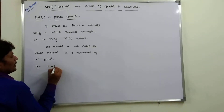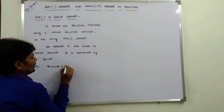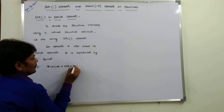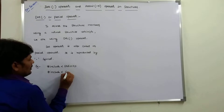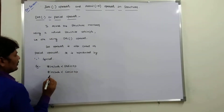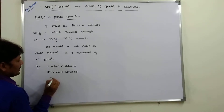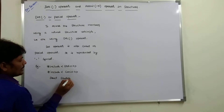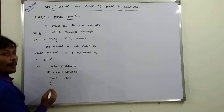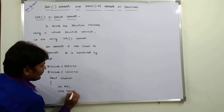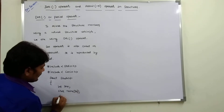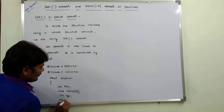Here is an example program. We have hash include stdio.h and hash include conio.h. We define a structure called student. The members of the structure are: int roll_number, char name of size 30, and int age.